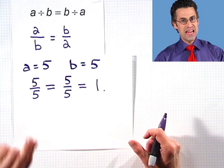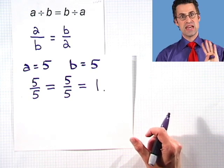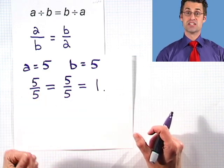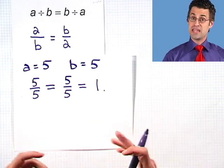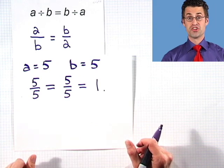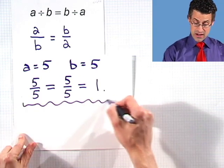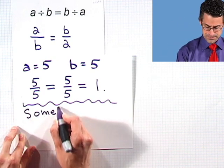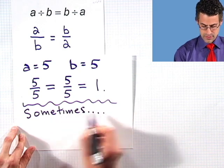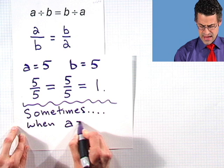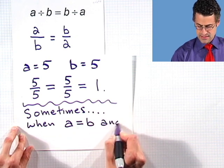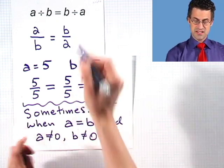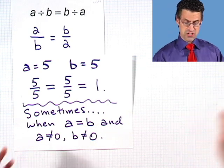But that's not quite right, because there's one number we can never, ever divide by, and it's so easy to have it slip through the cracks — we can't divide by 0. That is completely illegal; we get no answer. So I can't have A or B equal 0. Outside of that caveat, we have this holding when A equals B. So I'd say this holds sometimes, when A is equal to B and A is not 0 and B is not 0.